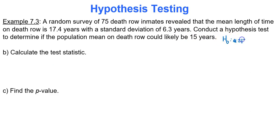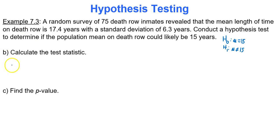Mu equals 15 for the null hypothesis, and mu is not equal to 15 for the alternative hypothesis. Now I want to calculate the test statistic. Since I'm dealing with the mean and the population standard deviation is unknown, I will use the following test statistic formula: X-bar minus mu, over s divided by the square root of n.